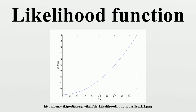This is not the same as the probability that those parameters are the right ones given the observed sample. Attempting to interpret the likelihood of a hypothesis given observed evidence as the probability of the hypothesis is a common error, with potentially disastrous consequences in medicine, engineering, or jurisprudence — see the prosecutor's fallacy for an example. From a geometric standpoint, if we consider f as a function of two variables, the family of probability distributions can be viewed as a family of curves parallel to the x-axis, while the family of likelihood functions are the orthogonal curves parallel to the theta-axis.